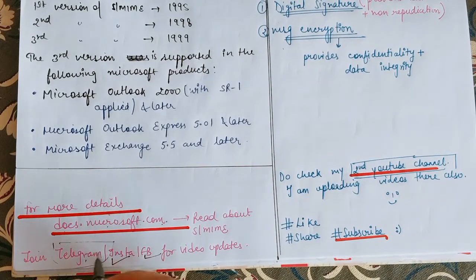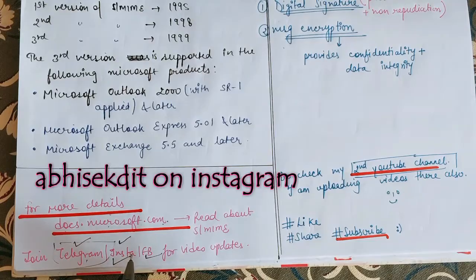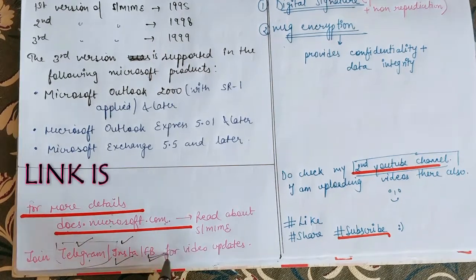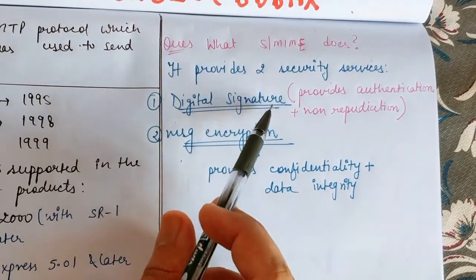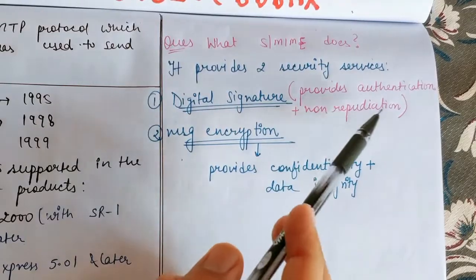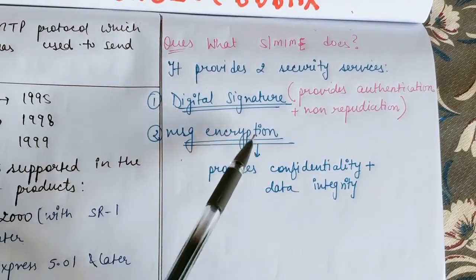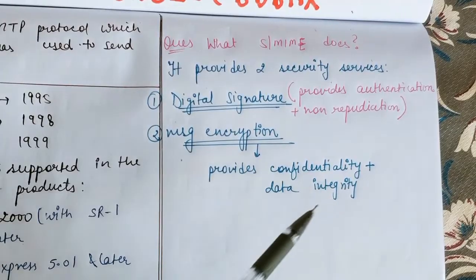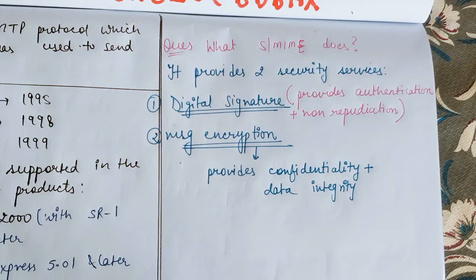If someone asks what are the two security services provided by SMIME protocol, they are digital signature and message encryption. With the digital signature concept, we automatically get authentication and non-repudiation. Message encryption provides confidentiality and data integrity. Overall, if we get these two services, our message is totally secure and no third party or adversary can attack, misuse, or change our data.